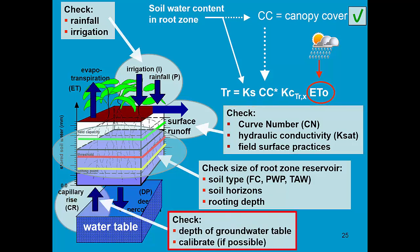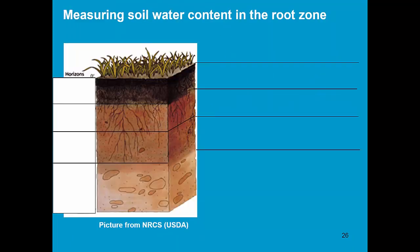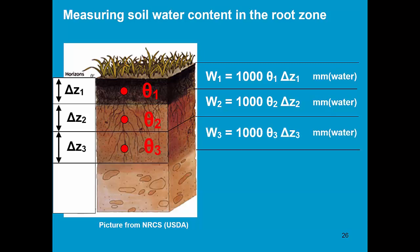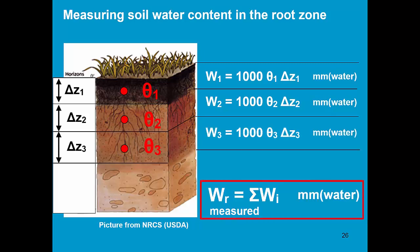Capillary rise is estimated by considering the depth of the groundwater table. AquaCrop offers options to calibrate capillary rise. We can also measure the soil water content in the root zone and enter that data in AquaCrop to check the simulation. We collect samples for the different horizons, and for each horizon we calculate the equivalent depth of water. The sum of the water content across horizons gives us the water content in the root zone.